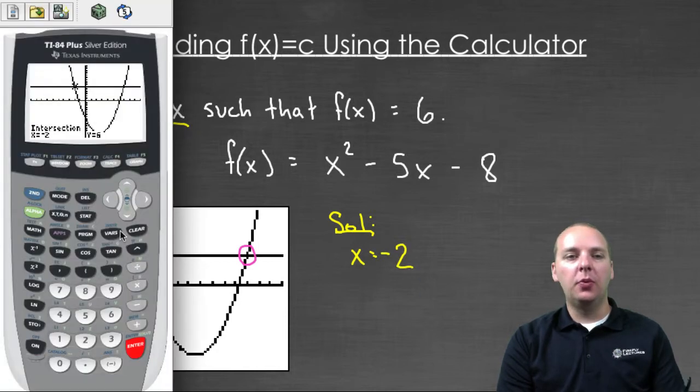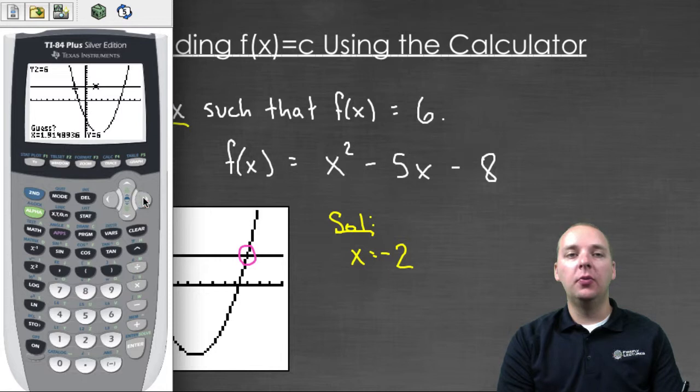And then we can go back and we'll repeat the same thing again. Second calc, intersect, first curve, second curve, and then this time for our guess, go over to the right intersection point. That's probably close enough. Push enter, and they'll say the intersection is at seven comma six. So again the x value is seven.